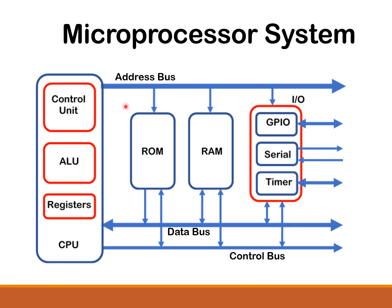All these components — the ALU, the ROM, the RAM, and the input-output devices — are all interconnected by three buses: the address bus, the data bus, and the control bus. Buses are basically electrical connections.